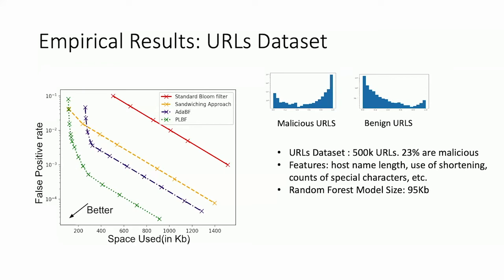But when we ran our optimization, our curve was significantly better. This example was on the URL dataset, and you can see on the right the distributions of scores for malicious and non-malicious URLs. The things in the set had all-high scores and the things not in the set had all-low scores — which is probably why we get this big gain. In other datasets, the less the learning has this separation property, the less gain you get from this technique.